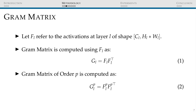Let F sub L refer to the activations at layer L, having shapes CL and HLWL. Essentially, each feature map is flattened and the layer is organized as a matrix. We compute the Gram matrix of this layer as shown in equation 1 — that is, we compute the correlation between feature maps. The method also introduces higher-order Gram matrices as shown in equation 2, recomputing this with multiple values of P in order to highlight prominent features.